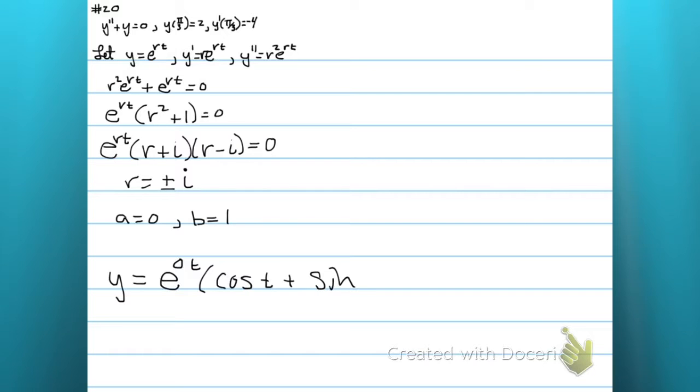So if we throw that into our general form for our solution, we'll see that we have c1 cosine t, c2 sine t, because e to the zero is 1. Then our solution is of this form.